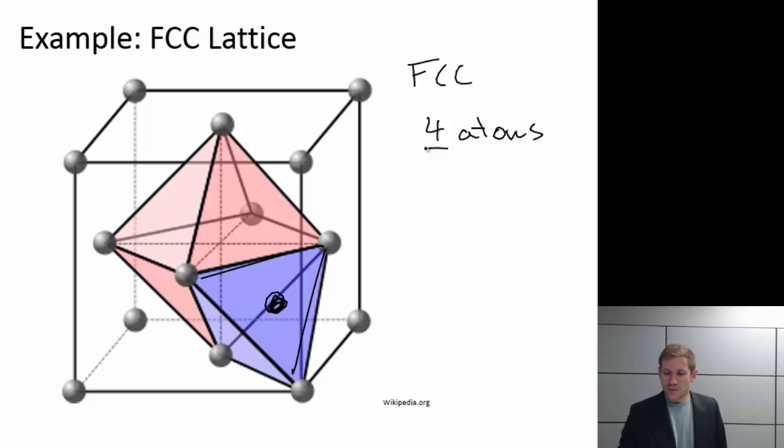So this atom on the top, it's sitting on that top plane, so it's only half in the unit cell. These atoms on the corner are only one-eighth in the unit cell. So if I add up all the atoms, I get to four atoms. I see four octahedral sites and eight tetrahedral sites.